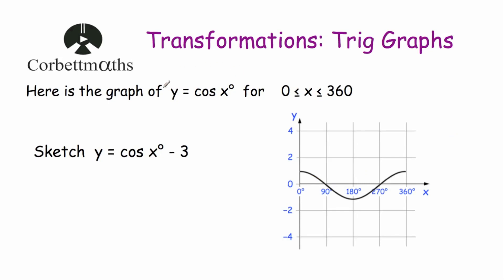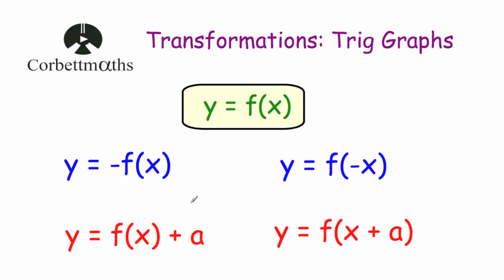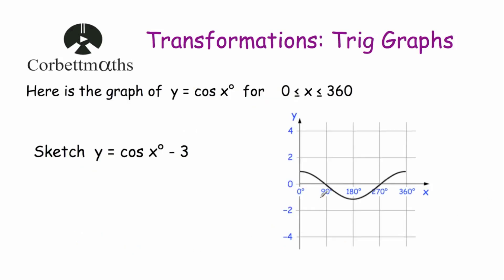Next, we've been asked to sketch y = cos x - 3. The minus 3 is outside the bracket, so it's a translation — moving the graph 3 squares downwards. The point (0°, 1) moves to (0°, -2); (90°, 0) moves to (90°, -3); (180°, -1) moves to (180°, -4); (270°, 0) moves to (270°, -3); and (360°, 1) moves to (360°, -2). Drawing a smooth curve through those points gives the graph.